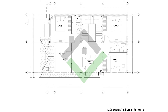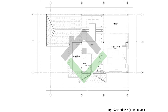Tiếp theo sẽ đến bản vẽ mặt bằng nội thất tầng 2. Tầng 2 được thiết kế gồm 1 phòng sinh hoạt chung có lối cửa mở ra khu vực sân chơi. Bên cạnh đó còn có 1 phòng ngủ master có nhà vệ sinh riêng, 2 phòng ngủ thường và 1 nhà vệ sinh chung. Khu vực cầu thang có đánh số thể hiện 25 bậc thang, đúng công thức 4n+1 theo phong thủy, rất tốt cho gia chủ.